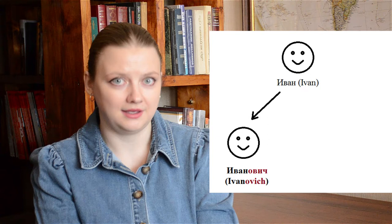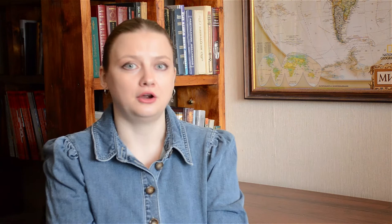Going back to patronymics — how do you form one? Basically, you take your father's name and add special endings, which differ for male and female forms. For example, let's take an imaginary man named Ivan. If Ivan has a son, then Ivan's son's patronymic will be Иванович — we add -ович to Ivan. However, if our imaginary Ivan has a daughter, her patronymic will be Иванoвна — not -ович, but -овна at the end.